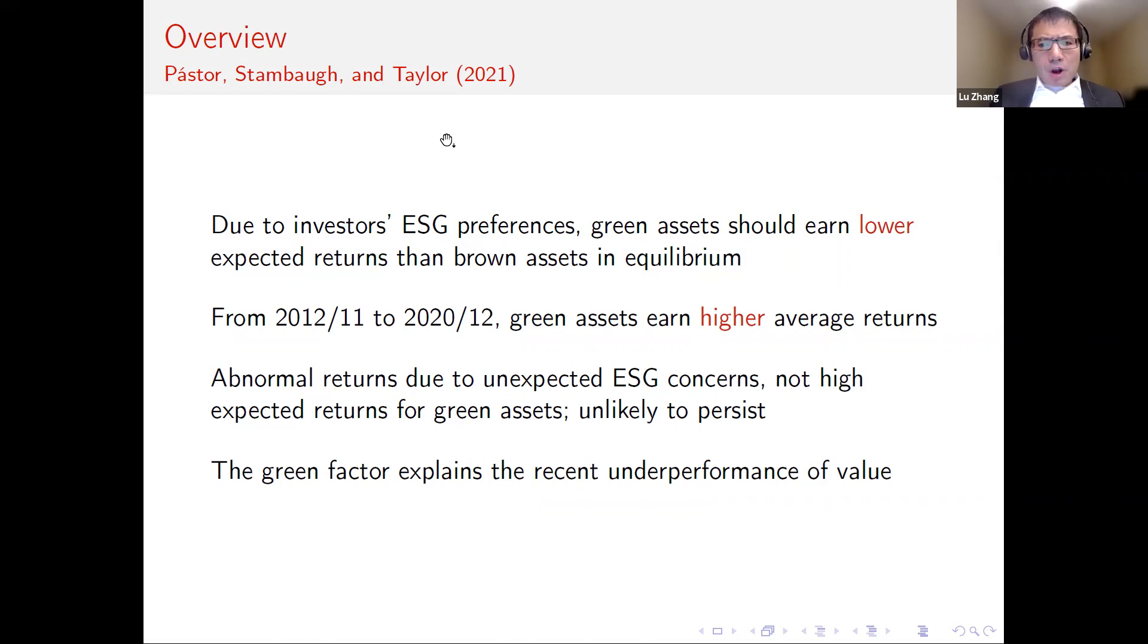In the paper, Rob and the co-authors show that because of investors' increasing ESG concerns, green assets should earn lower expected returns than brown assets in theory, in particular in equilibrium.